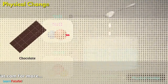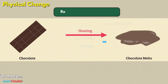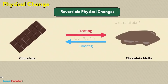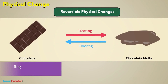Physical changes are generally reversible and the change is reversed by reversing the conditions. This means that after the change, it is possible to regain the shape, size, color, or state of the substance by undoing the applied conditions.